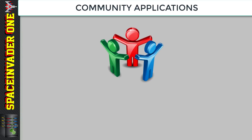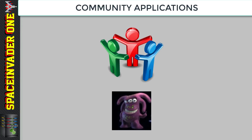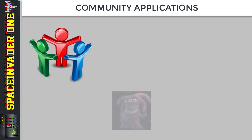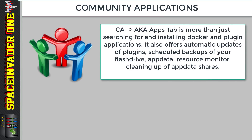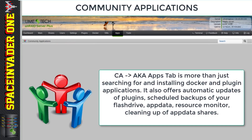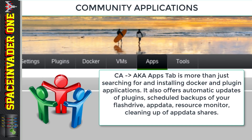So in this video, we'll be looking at some of the amazing community applications family of plugins by Andrew Zavadsky, aka SQUID. Community Applications, or CA for short, is most commonly known as the plugin that we use to install all the other plugins and docker containers on the Unraid server. But there's actually more to CA than just the apps tab — CA is actually a suite of plugins.